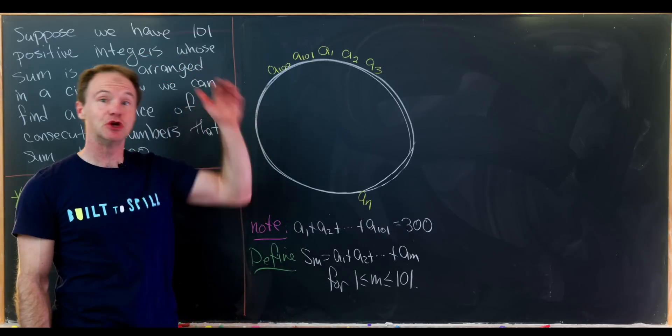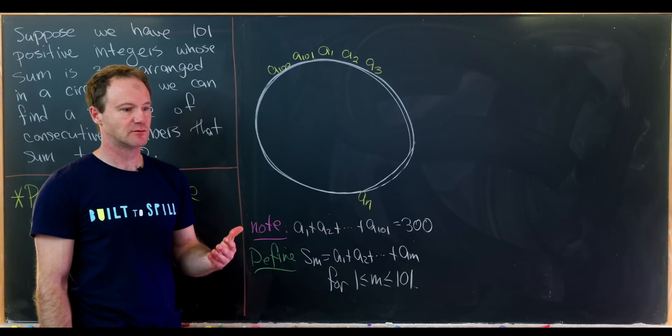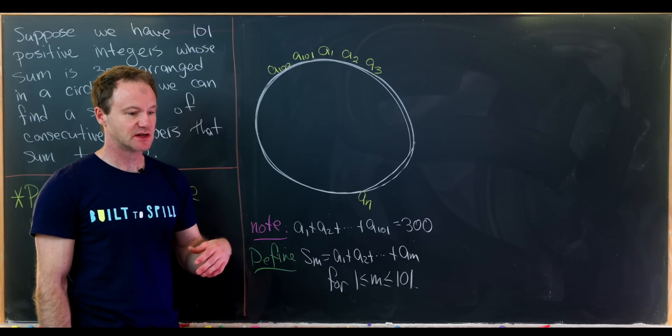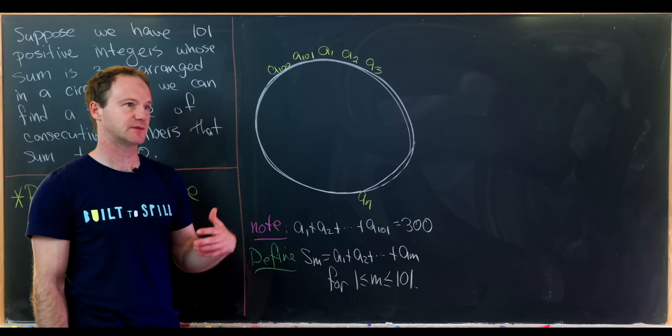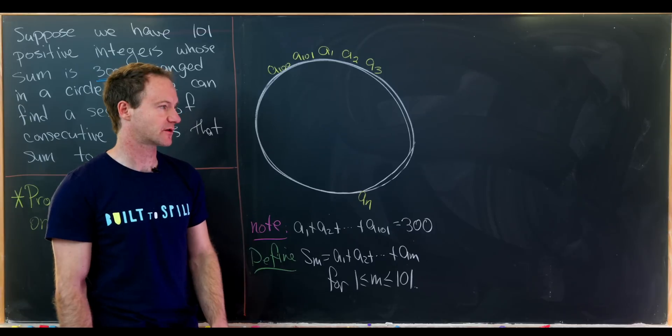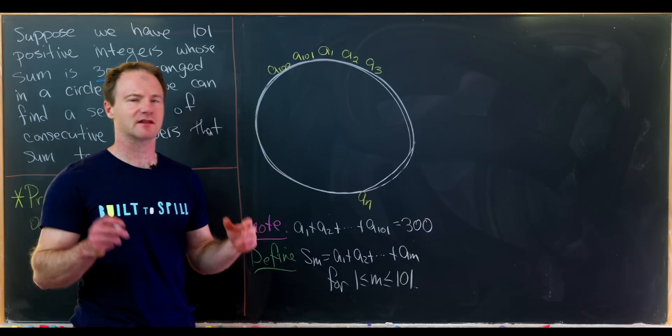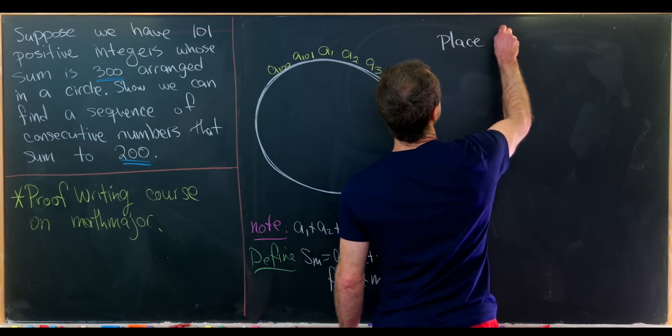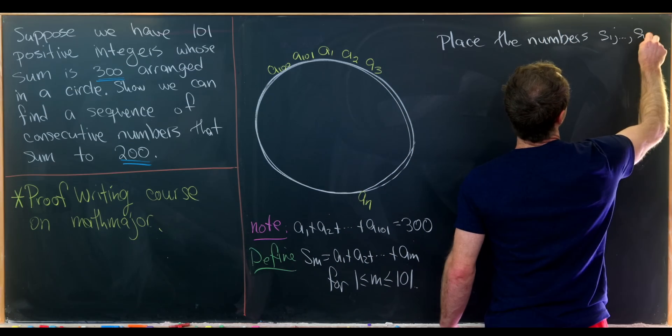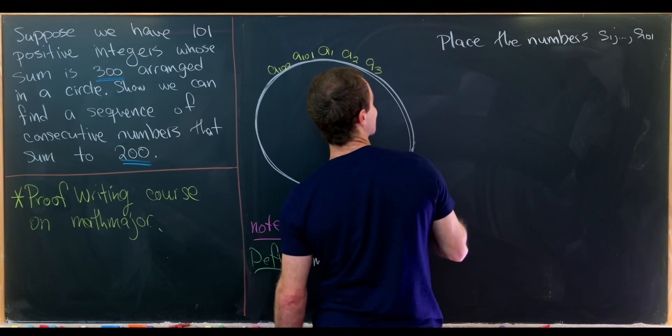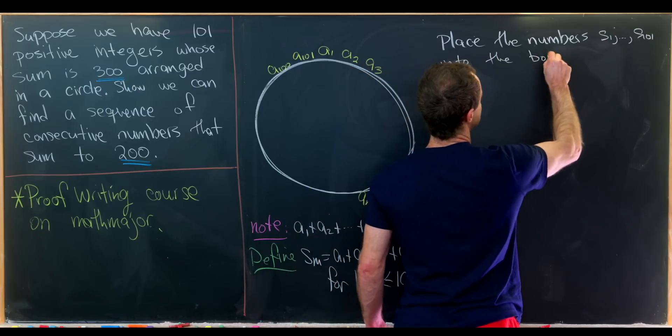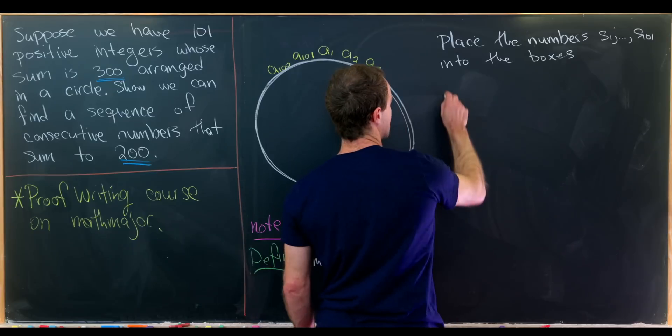And each of them have two ending digits. But there are only a hundred possibilities for those ending digits. They could be of the form something 00, something 01, so on and so forth. So the way to write that down a little bit more carefully is like this.